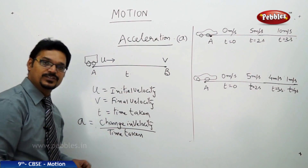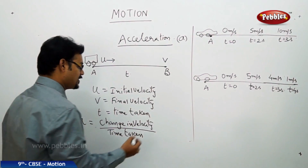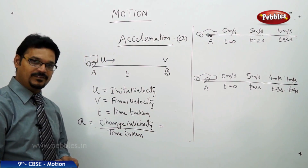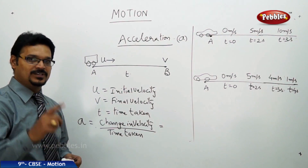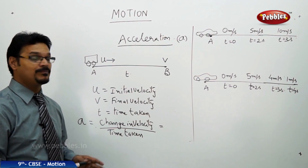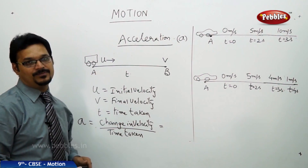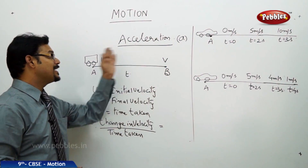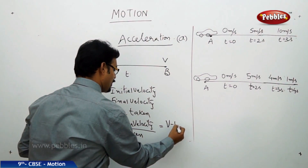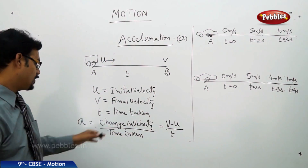See how simple the definitions are — change in velocity by time taken. Change in velocity means what? Is it u plus v or v minus u? Whenever we say change, we always need to take final minus initial. So, it is v minus u divided by t. This is the acceleration formula: a = (v - u) / t.